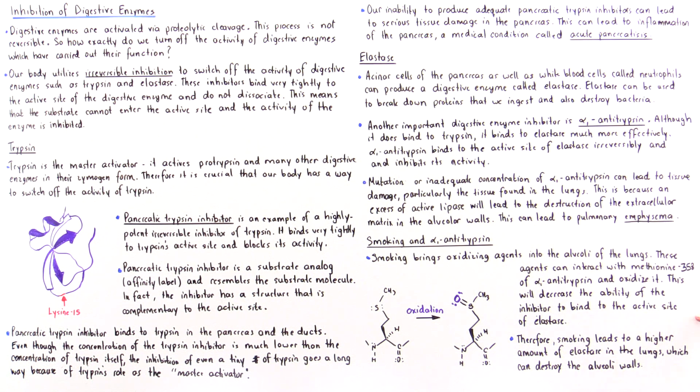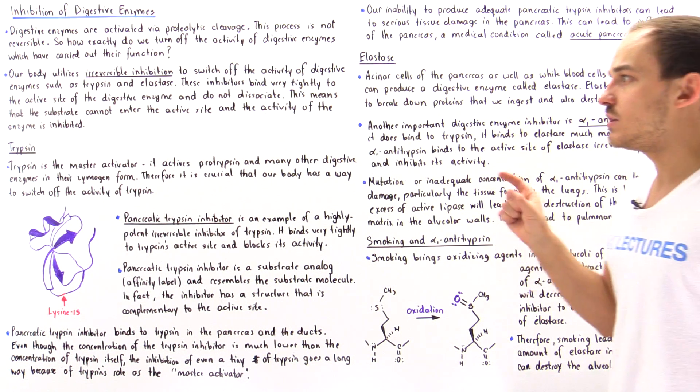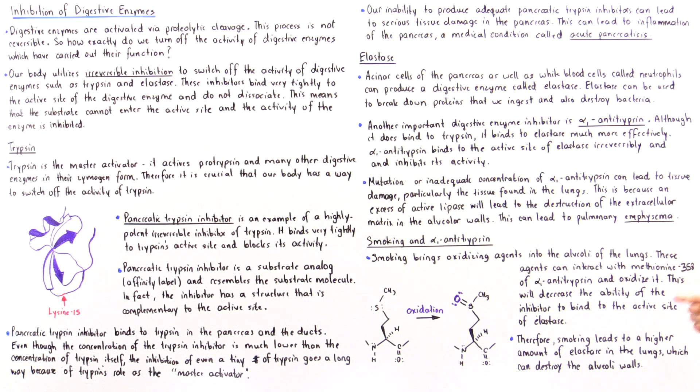Therefore, smoking leads to a higher concentration of active elastase in the alveoli of the lungs and this can basically destroy the tissue in the lungs and that can increase the likelihood that the person who smokes will develop the medical condition we call pulmonary emphysema or destructive lung disease.